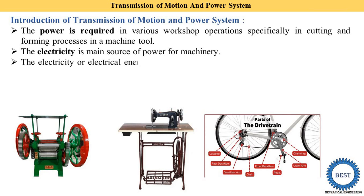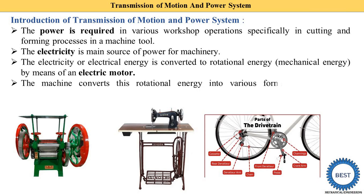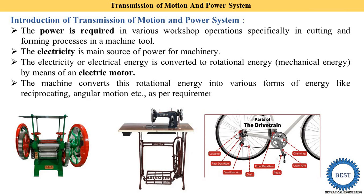In the majority of machines, electric motors are used to convert electricity into mechanical energy — that is, rotational energy. The machine then converts this rotational energy into various forms such as reciprocating motion, angular motion, or other motions as required by the process. For example, a sugarcane crushing machine is run by electric motors or sometimes by hand.